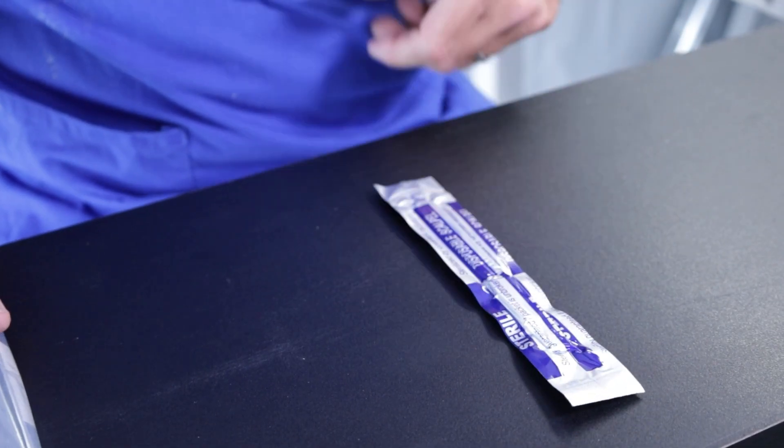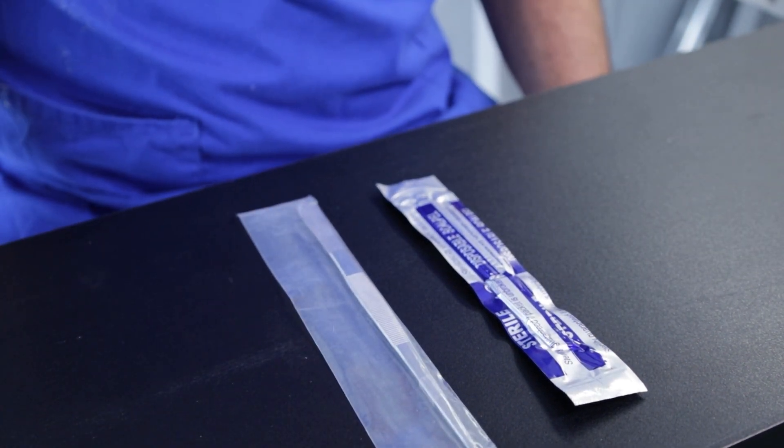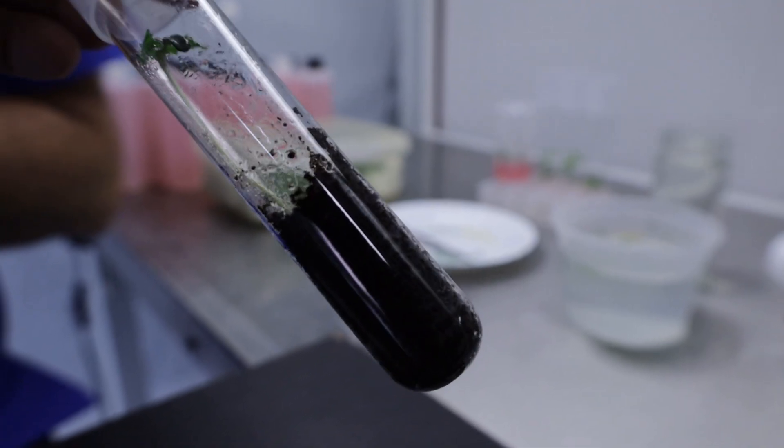Also included, sterile scalpel, the last item in the seed kit, and forceps for picking up your seeds and planting them in the tubes and for extracting your seedling from the tube to go into potting mix.